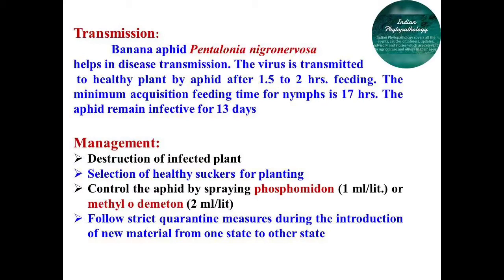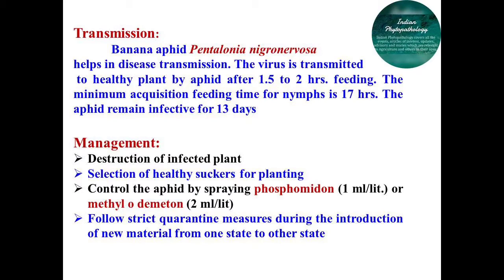Transmission of bunchy top virus is by the banana aphid, Pentalonia nigronervosa. The virus is transmitted to healthy plants after 1.5 to 2 hours of feeding. The minimum acquisition feeding time is 17 hours, and the aphid remains infective for 13 days. For management, control the insect vector by spraying with insecticides — phosphamidon, methyl demeton, or dimethoate at 2 ml per liter. Use disease-free suckers for planting to avoid primary and secondary infection spread by the banana aphid.